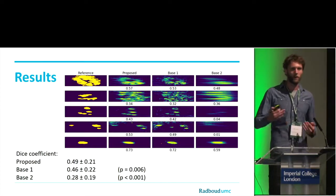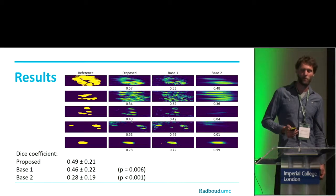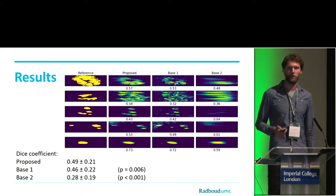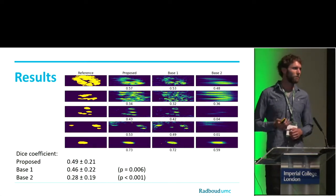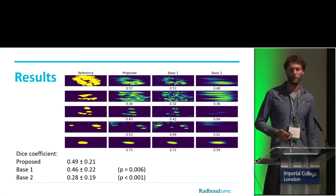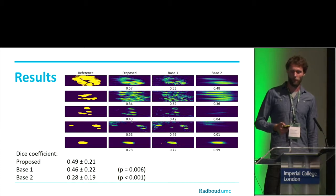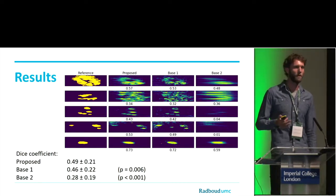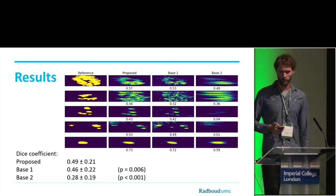Combining multiple B-scans and looking at the projection in an en face view, we can calculate dice coefficients to compare the reference annotation with the segmentations of the different methods. The dice scores are not super high. Different reasons account for this — one is probably that registrations might be off, and sometimes because graders used also another modality, so we are not sure what the upper limit of performance is. The difference between the proposed method and base-1 does not seem very large, but comparing them on a pairwise basis, the proposed method is statistically significantly better than both baselines.